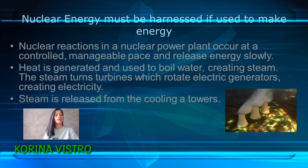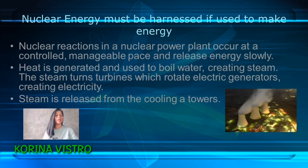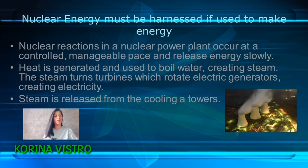Nuclear reaction in a nuclear power plant occurs at a controlled, manageable pace and releases energy slowly. Heat generated is used to boil water, creating steam. The steam turns turbines, which rotate an electric generator, creating electricity.